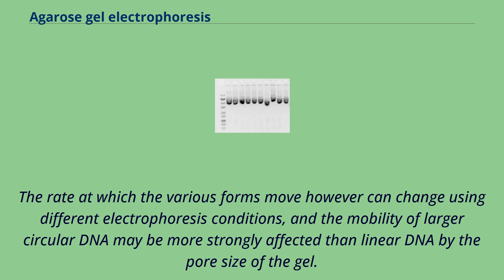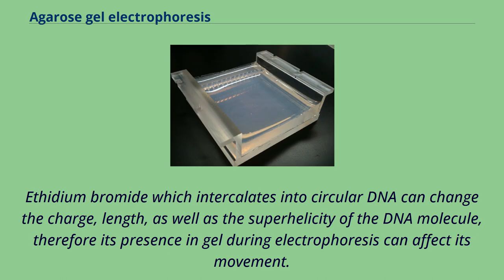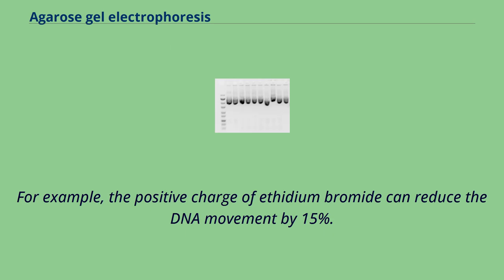Ethidium bromide, which intercalates into circular DNA, can change the charge, length, as well as the superhelicity of the DNA molecule. Therefore its presence in gel during electrophoresis can affect movement — for example, the positive charge of ethidium bromide can reduce DNA movement by 15 percent.